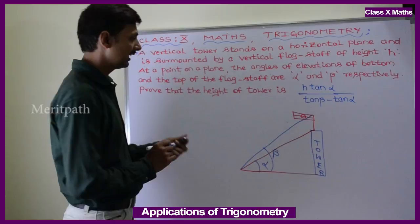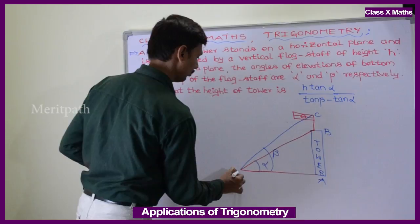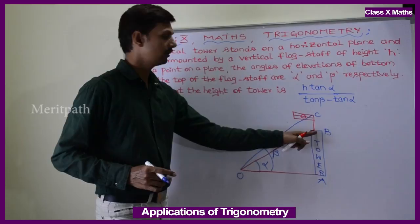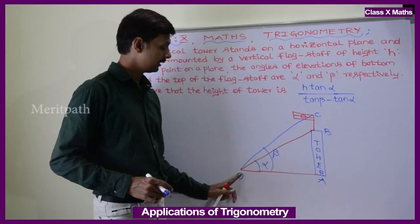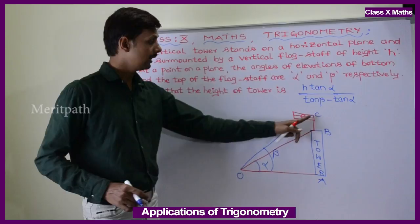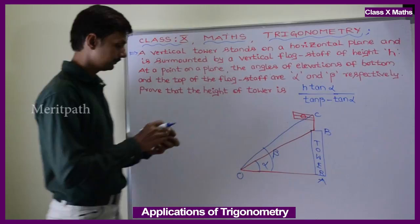Let us take the names of the points: A, B, C, and O. The bottom of the flagstaff is B and the top of the flagstaff is C. The bottom of the tower is A, and the observation point is O. The angle at the bottom of the flagstaff is alpha and at the top is beta.